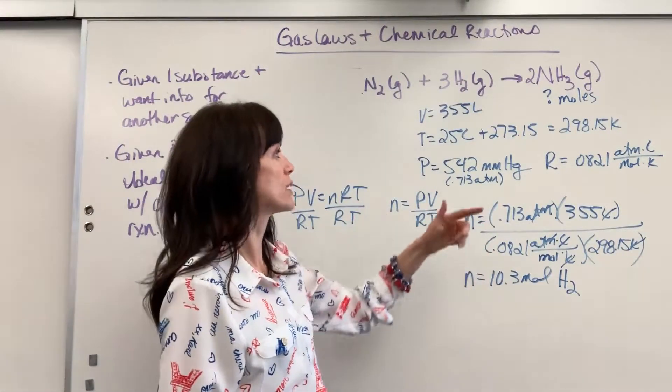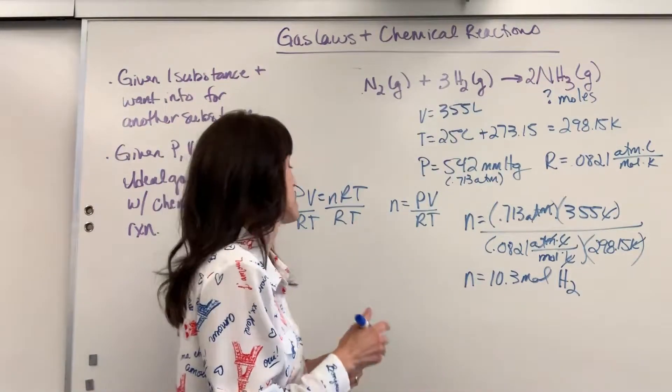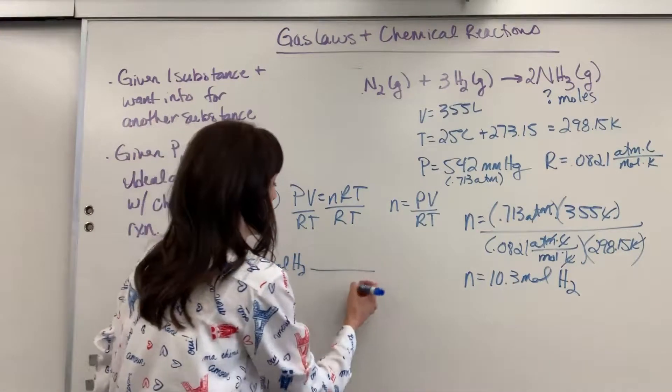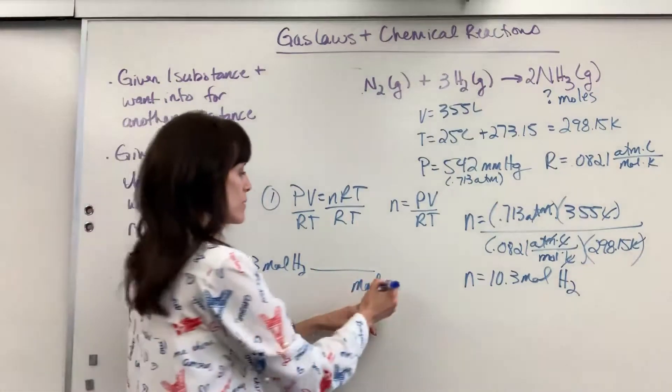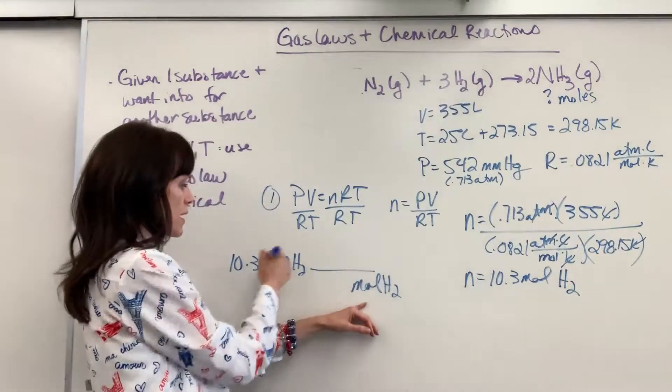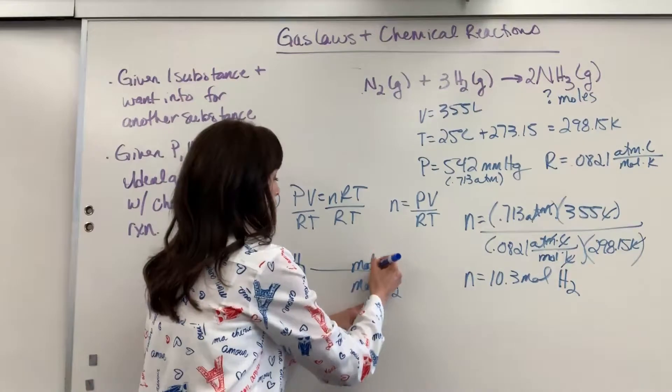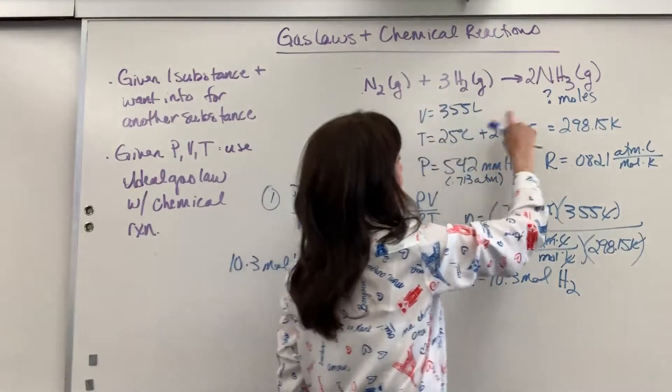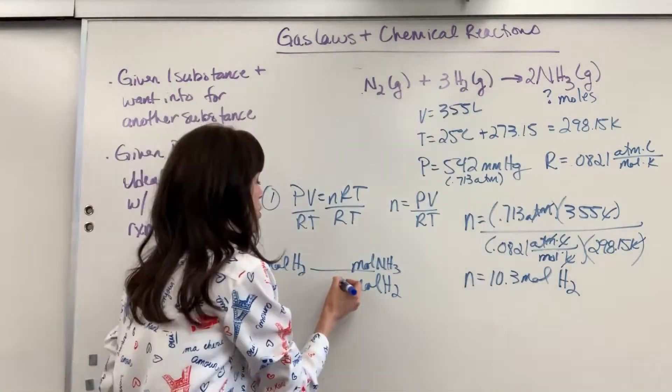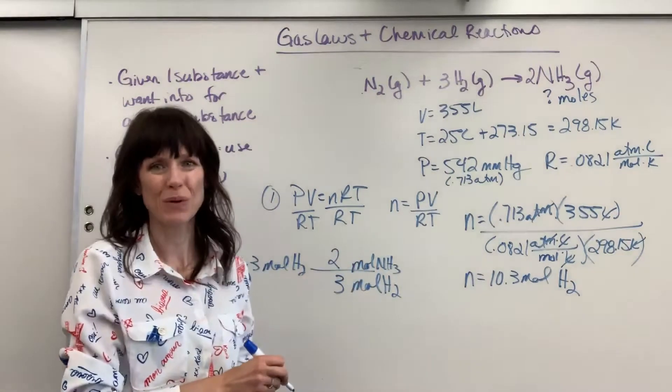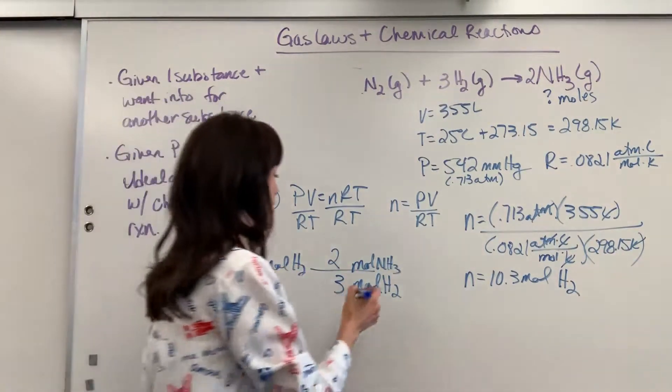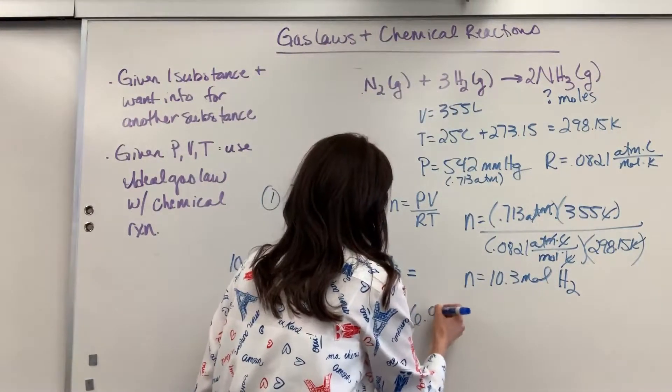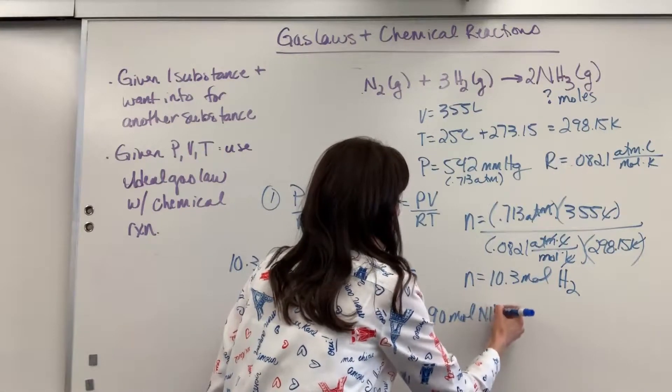Now let's take the moles of hydrogen and do our stoichiometry. Use that molar ratio to walk the bridge and get to ammonia. We have 10.3 moles of hydrogen. I want to cancel out the moles of hydrogen, so I put that on the bottom. We want moles of ammonia. I look at my molar coefficients: three moles of hydrogen produces two moles of ammonia. So 10.3 times two divided by three is going to give us 6.90 moles of ammonia.